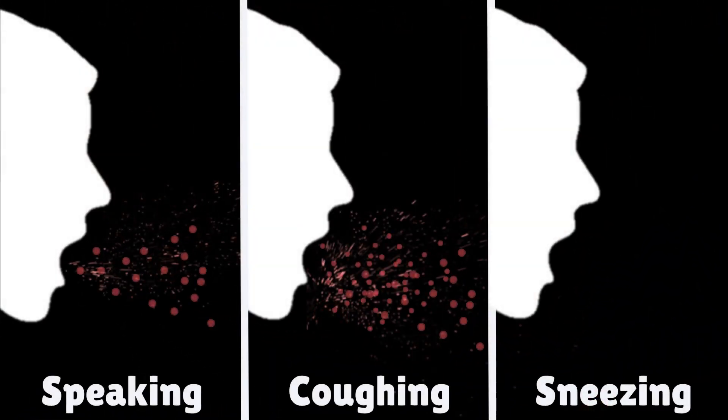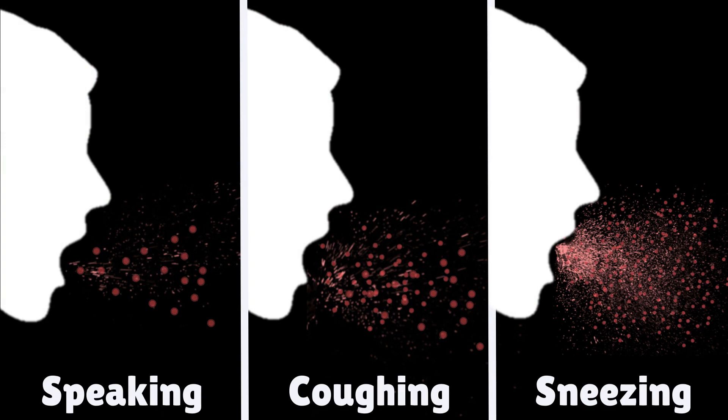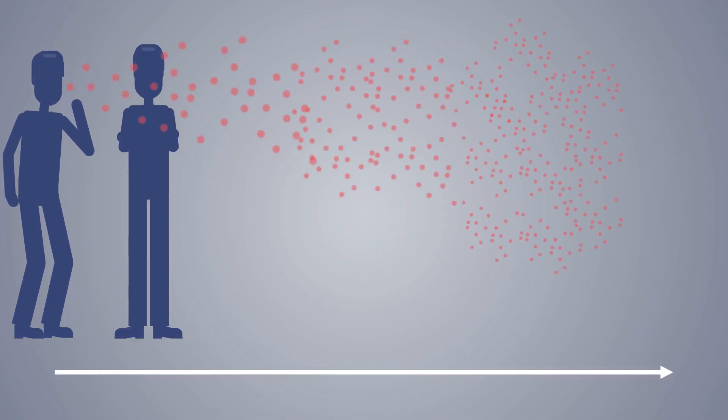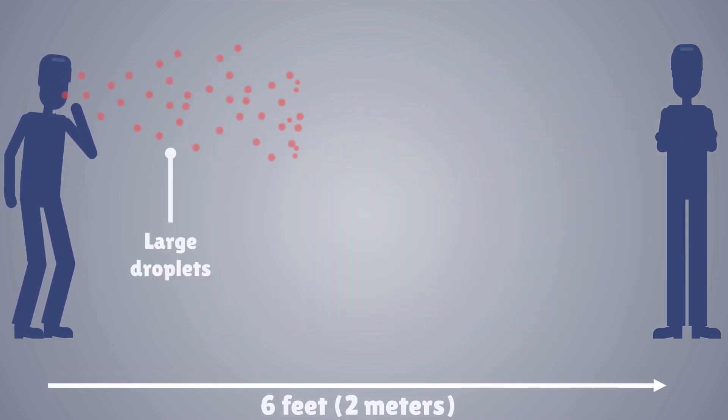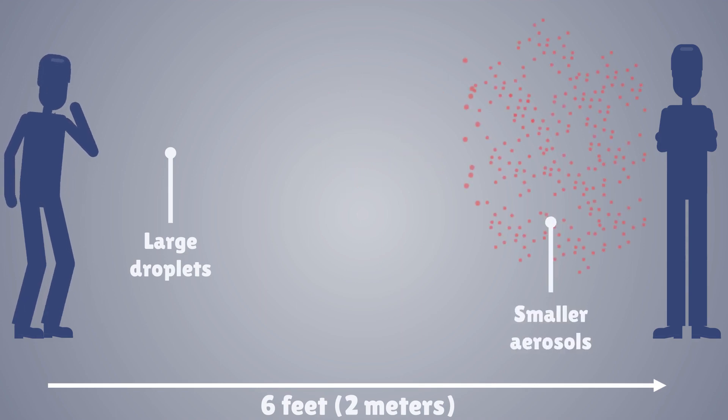Both coughing and sneezing expel even more viral droplets respectively, and we now know that these particles can travel up to 6 feet, hence the physical distancing rules. These particles are expelled as large droplets that evaporate over distance and form smaller particles known as aerosols. These particles can travel farther and stay suspended in the air for on average 3 hours, moving along with airflow patterns.